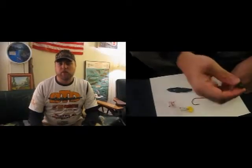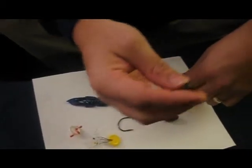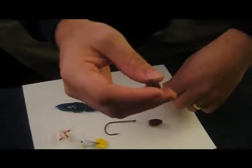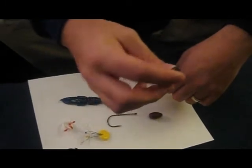You need a heavy true tungsten sinker, somewhere between three-quarter ounce to an ounce and a half to help you punch the mat and get that weight through. You can go anywhere from probably half, three-quarter ounce all the way up to an ounce and a half, depending on the cover you're flipping.